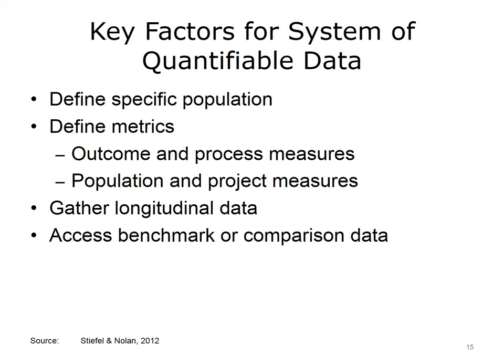Achieving a system of quantifiable data requires four key factors. One needs to define the specific population of interest. It is also necessary to define metrics for outcome and process measures, and for population and quality improvement project measures. One has to have the ability to gather data over a long time period. And finally, one needs to access benchmark or comparison data.